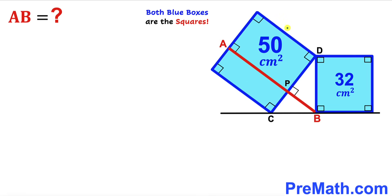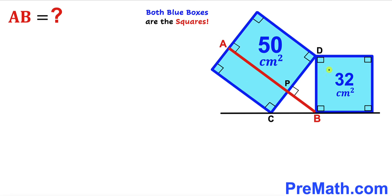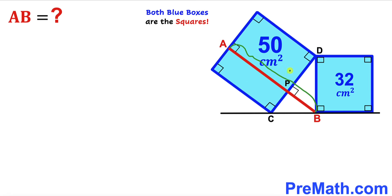Welcome to pre-math. In this video we have two blue shaded squares of different dimensions put together such that they connect each other at point D. The area of the larger blue square is 50 cm² whereas the area of the smaller blue square is 32 cm². Segment AB is perpendicular to the larger blue square, and our task is to find the length of segment AB.